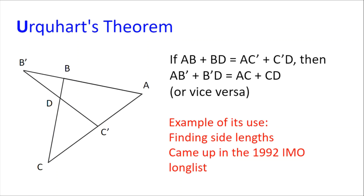Finally, we have U for Urquhart's theorem. If we have straight lines B'BA and CC'A, and if AB + BD equals AC' + C'D, then AB' + B'D equals AC + CD. The converse is also true: if AB' + B'D equals AC + CD, then AB + BD equals AC' + C'D. This can be very useful in finding side lengths, and the theorem is not very well known, so entire problems could rely on it, such as a problem from the 1992 IMO longlist. Proving this theorem is advised — one way to do it is through trigonometry, which may be covered in a later video.